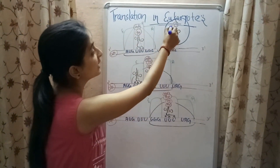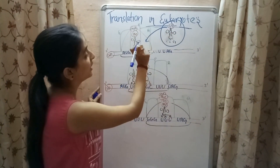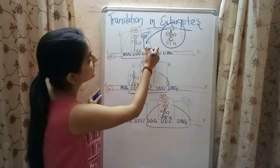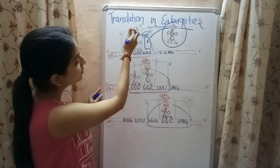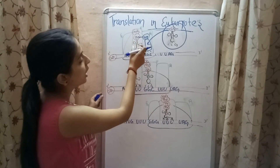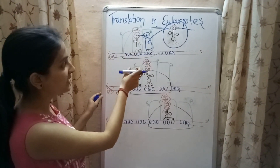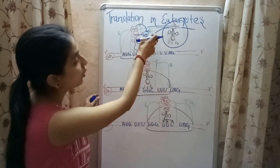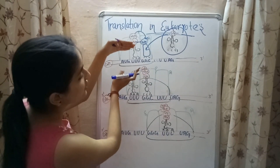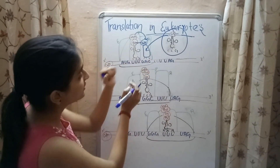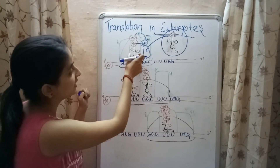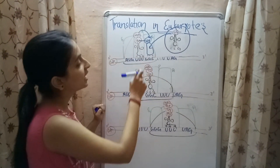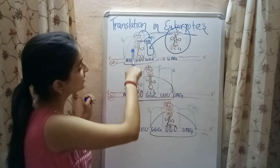The new charged tRNA molecule enters the A site of the ribosome, and again a peptide bond is formed between its amino acid and the growing chain. The tRNA at the P site transfers its amino acids to the tRNA at the A site. The ribosome then shifts one triplet forward, the P site tRNA exits through the E site, and the tRNA at the A site moves to the P site.